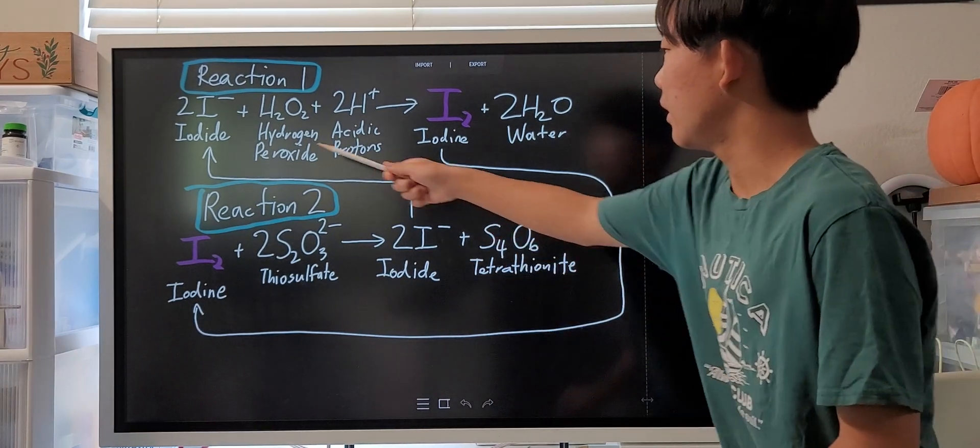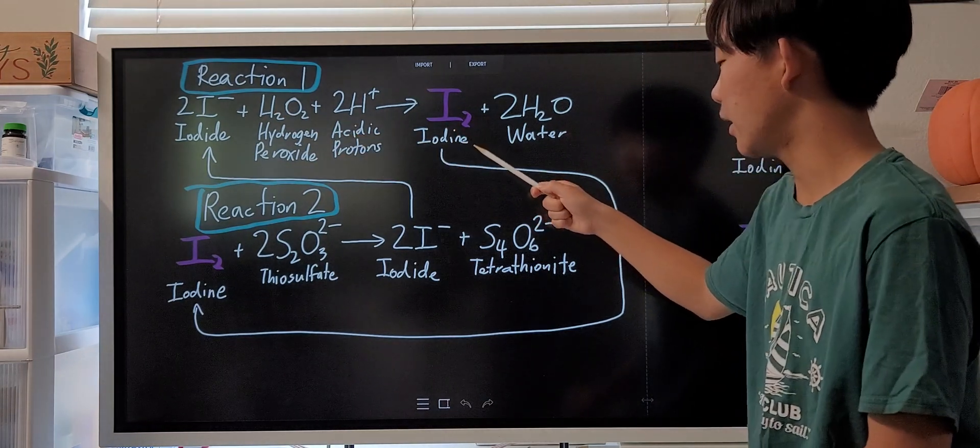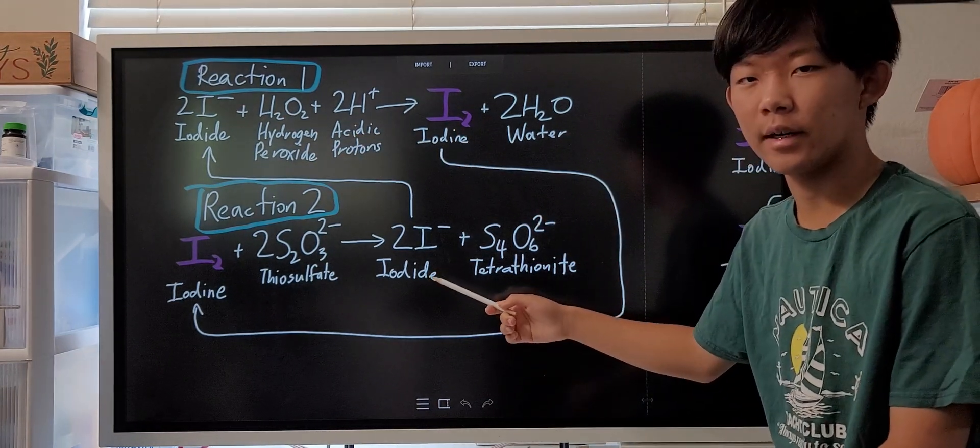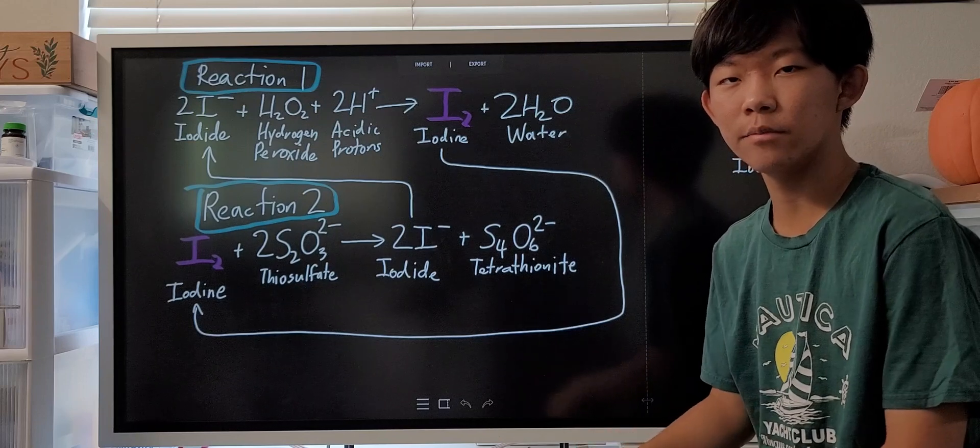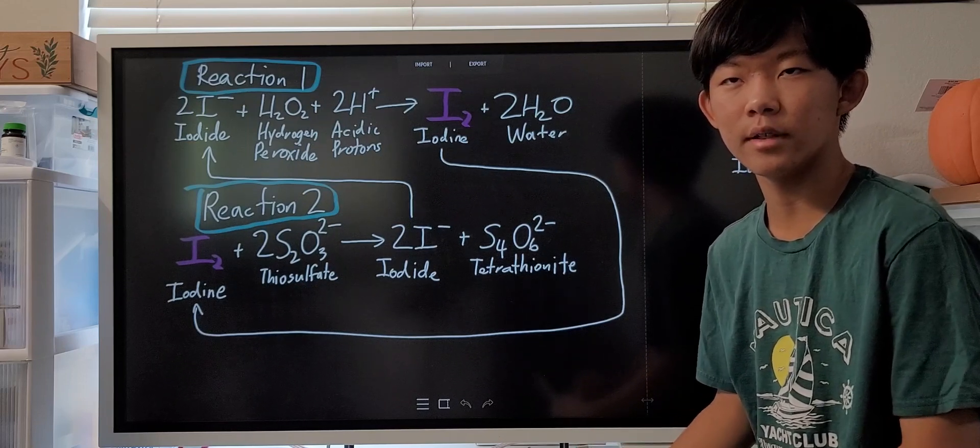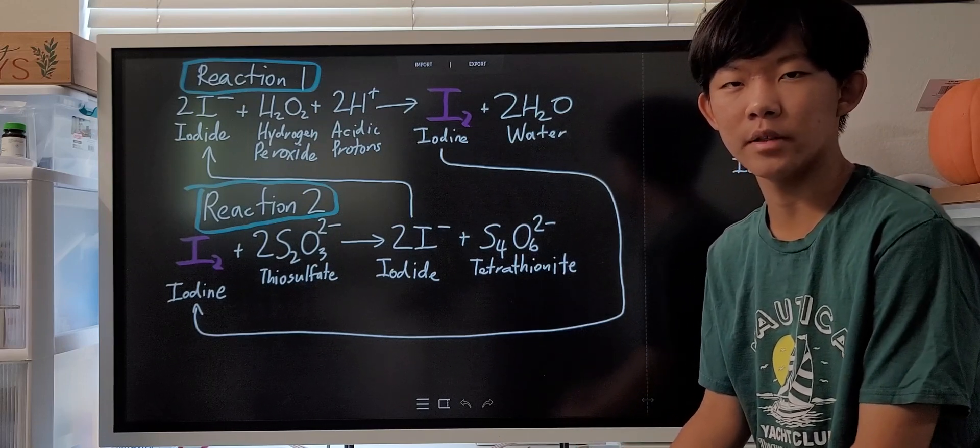this iodine was immediately reduced by the thiosulfate ions back to the colorless iodide ions. So basically, the iodide was oxidized to iodine and then quickly reduced back to iodide again. So basically, there's just a loop reaction, so there's no overall formation of iodine.